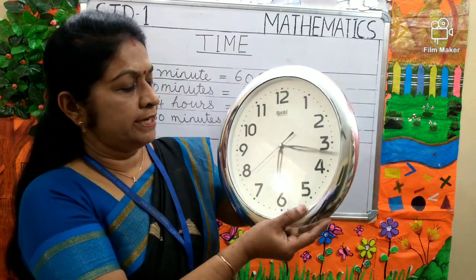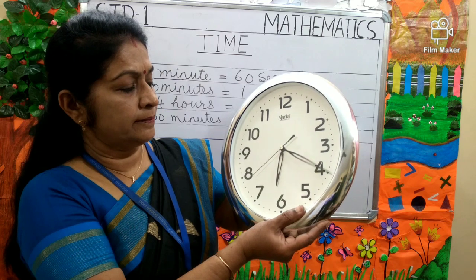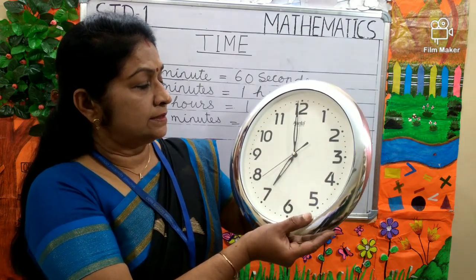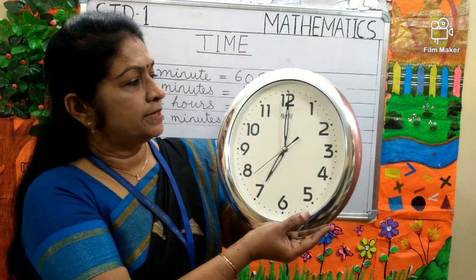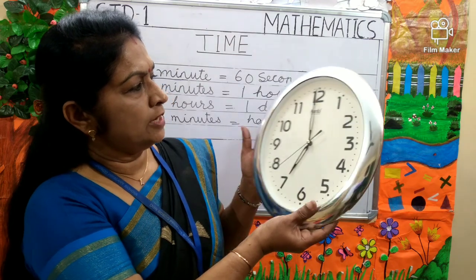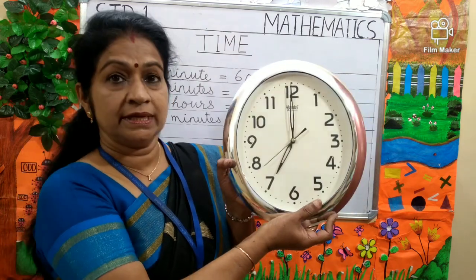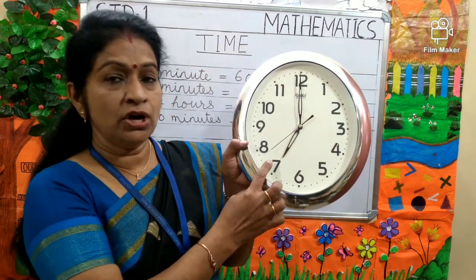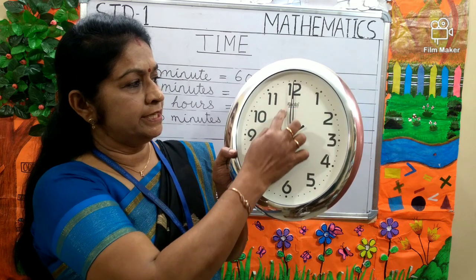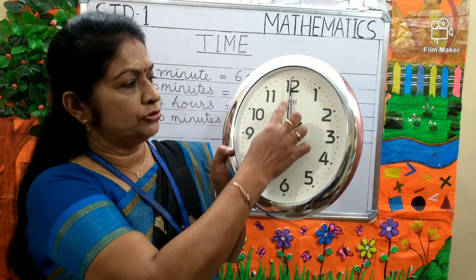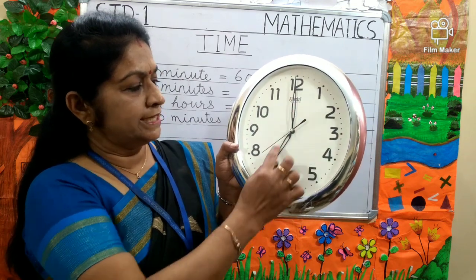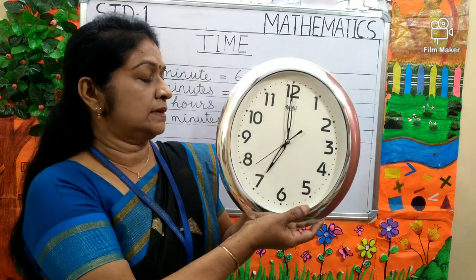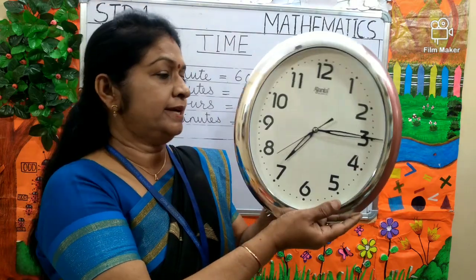Can you tell me the time now? The hour hand is on 7 and the minute hand is on 12. So the time is 7 o'clock.